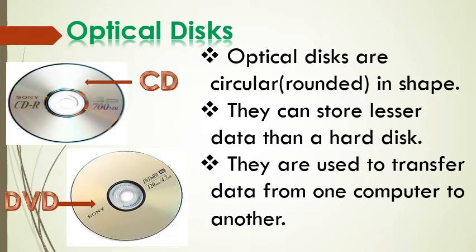Next we have optical disk. Optical disk mein CD and DVD dono hi aate hai. Optical disks are circular, rounded in shape — jaise aapko picture mein bhi dikhaya rakha hai, round shape mein. They can store less data than a hard disk. Yeh data ko bahut hi kam store karte hai as compared to hard disk.